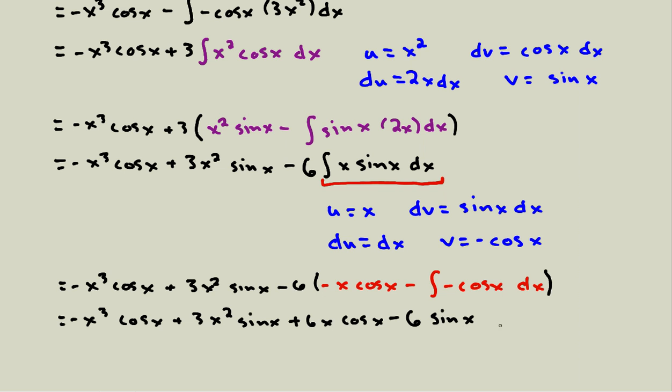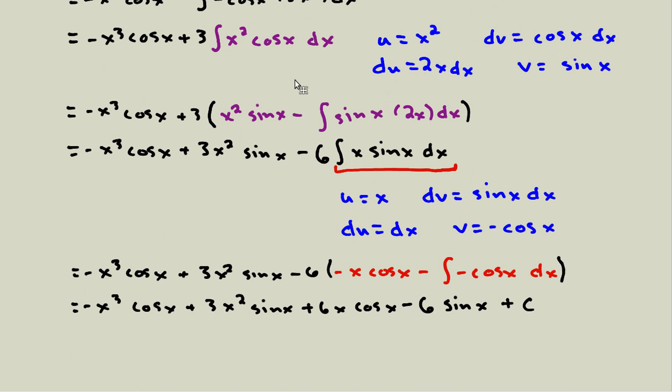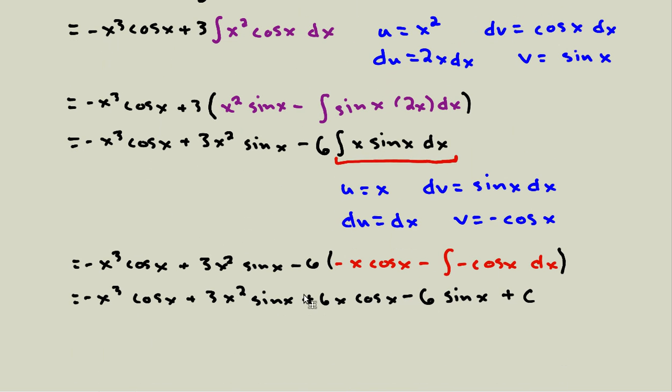And I can actually just do this integral. So cosine of x, when I integrate it, will become sine of x. And then the last thing, it's the easiest to forget, we need a plus c for this indefinite integral. So at the end of the day, we used integration by parts three times, and we were able to go from x cubed sine of x dx to this expression that has five terms, if we count the constant, and no integrals remain.